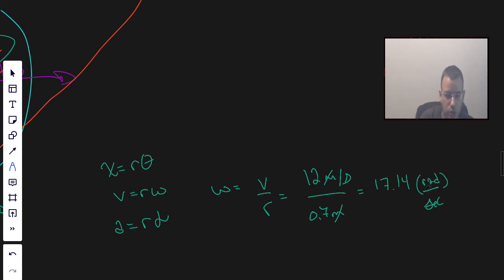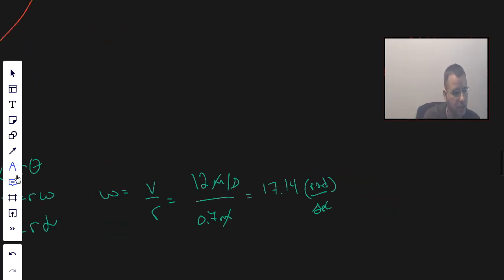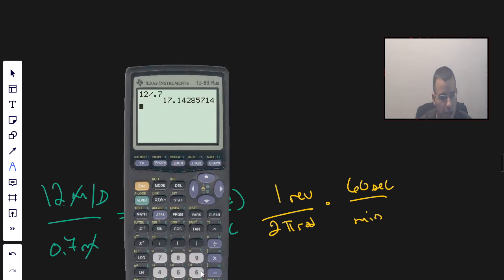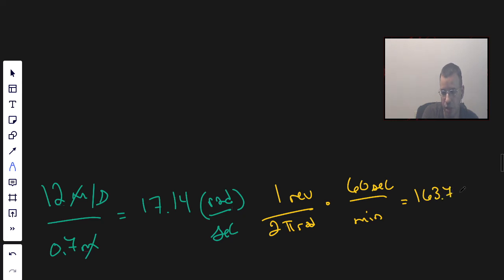But we don't want radians, we want rotations, and we want them in minutes. So we're going to do some more conversions. There's two pi radians per one revolution. We'll have 60 seconds for every minute. So we'll take our previous answer, multiply by 60, divide by 2 times 3.1415. That gives us 163.7 rotations per minute.